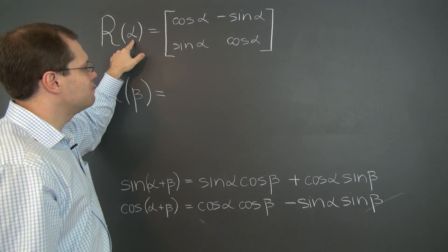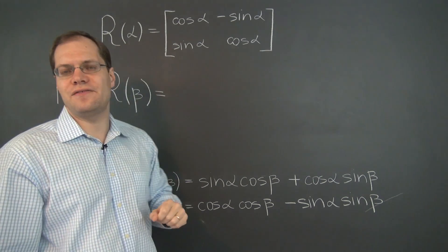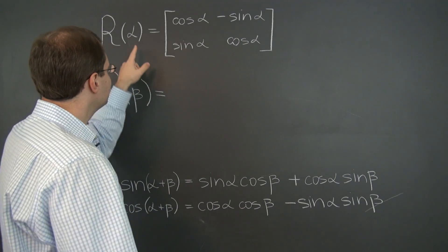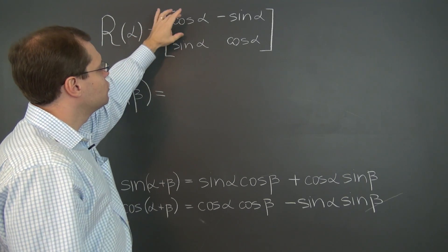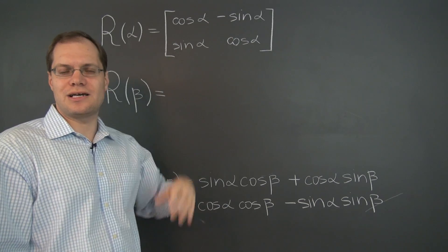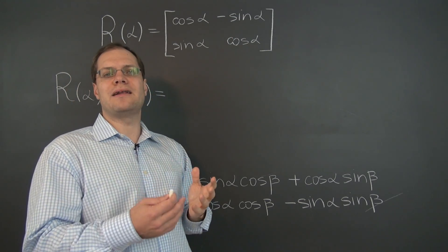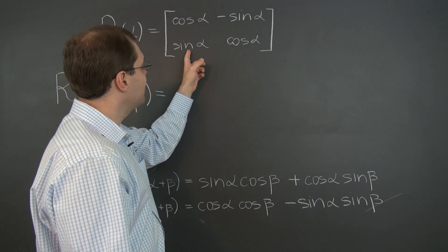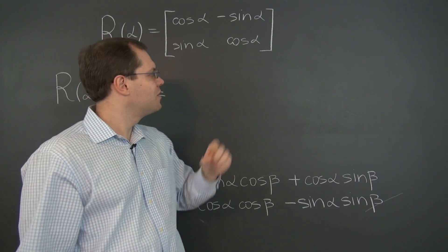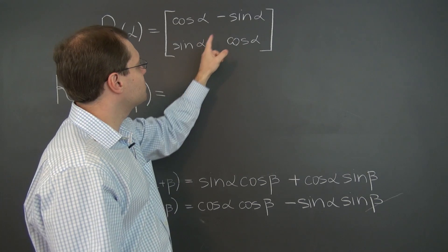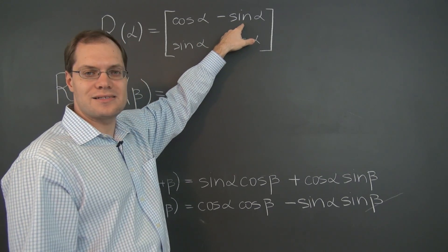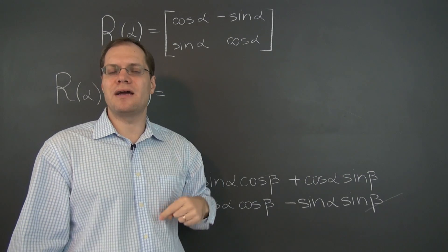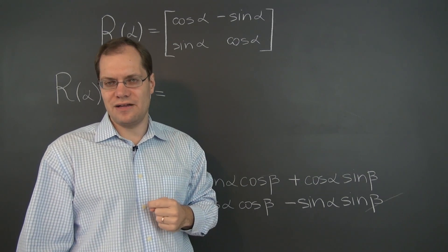What happens when you plug in minus alpha instead of alpha? When you plug in minus alpha, cosine keeps its sign because cosine is an even function. Cosine of minus alpha equals cosine of alpha. What happens to the sine? Sine changes its sign. And these two numbers will pick up the minus sign. In other words, they'll trade places compared to the opposite value of alpha.